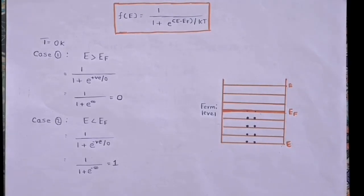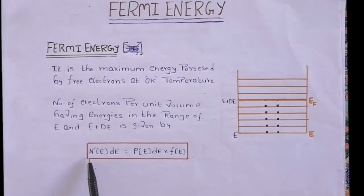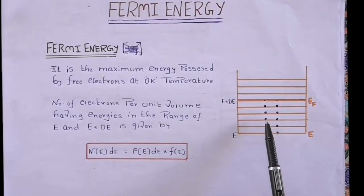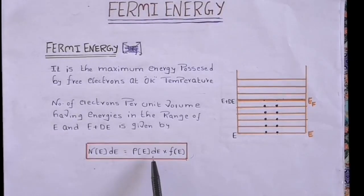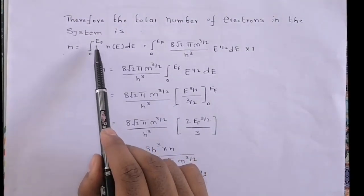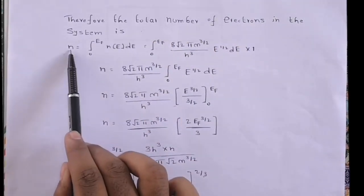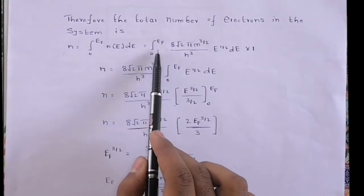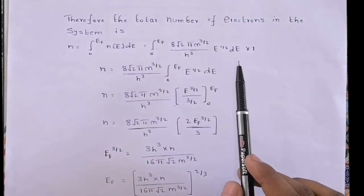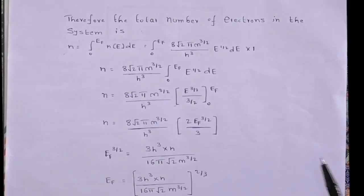This expression gives us the number of electrons per unit volume in a particular energy range. To find the total number of electrons in the system, we integrate this expression between the limits 0 and E_F, where E_F is the Fermi energy. The total number of electrons N is: N = ∫₀^(E_F) [8√2 π m^(3/2) / h³] × E^(1/2) dE × 1, since F(E) = 1 as discussed earlier.